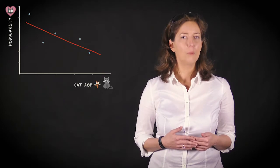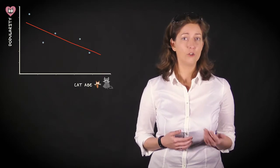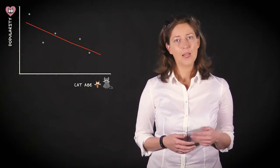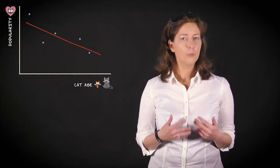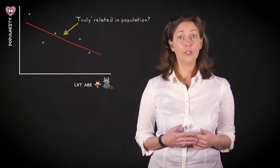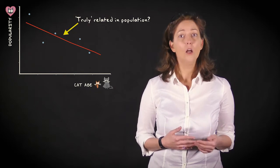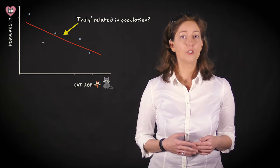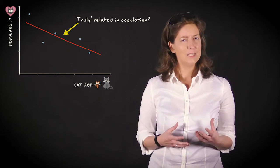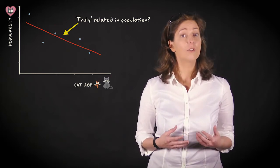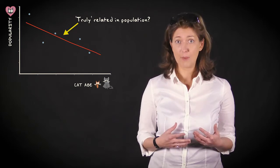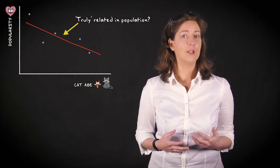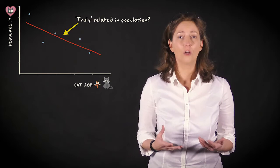Consider the example where we predicted popularity of cat videos, measured as number of video views, using the cat's age as the predictor. Suppose we want to use regression analysis to infer whether the variables cat age and popularity are related or independent. To ensure that our analysis results in valid decisions, we need to make sure the assumptions of linear regression are met. If they're not met, we might over or underestimate the p-value and draw the wrong conclusion.